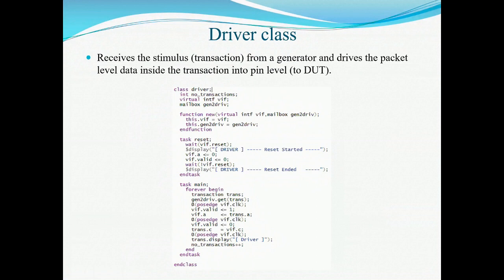This is the driver class. The driver's main function is to interact with the design under test. It receives transactions from the generator and drives the packet level data inside the transaction into the DUT. A mailbox is declared here as Gen2Drive — the same mailbox declared in the generator — so the driver can access values from it. A task is declared to reset the driver, setting all interface values to 0. A main task is present in which all valid transactions are continuously given to the interface using a for loop, and after each transaction a counter value is incremented.